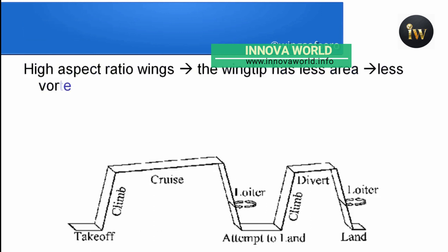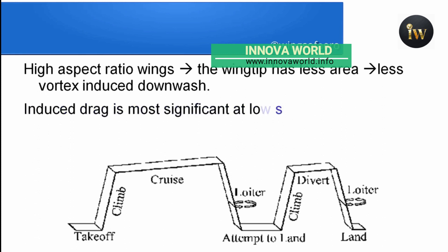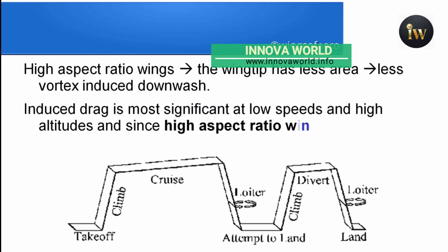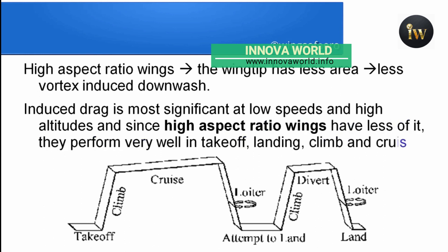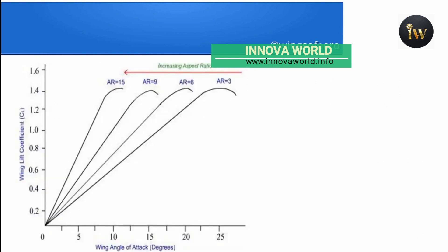High aspect ratio wings have a major advantage because the wing tip has less area where there is less vortex or induced downwash, which means a lot less induced drag. Induced drag is most significant at low speed and high altitude, and since high aspect ratio wings have less of it, they perform very well in takeoff, landing, climb, and cruise flight.